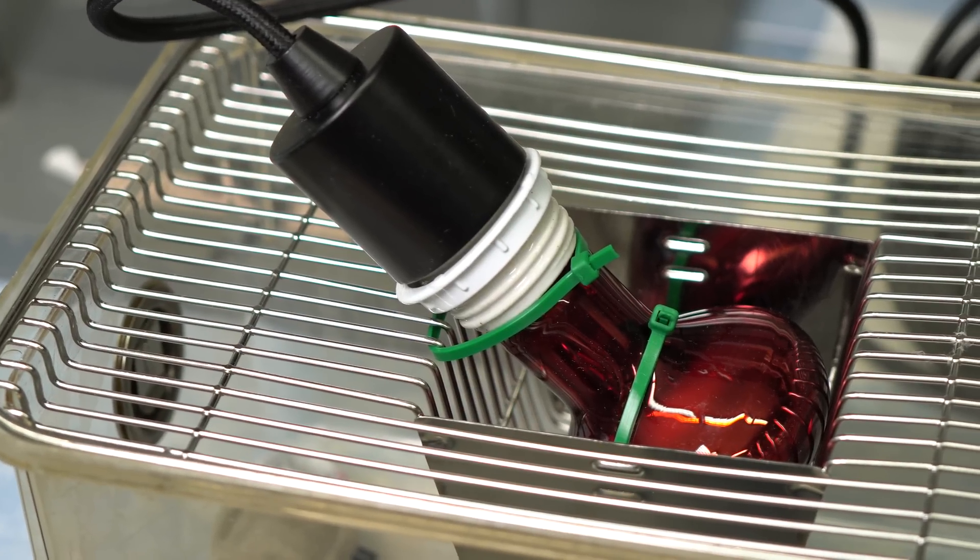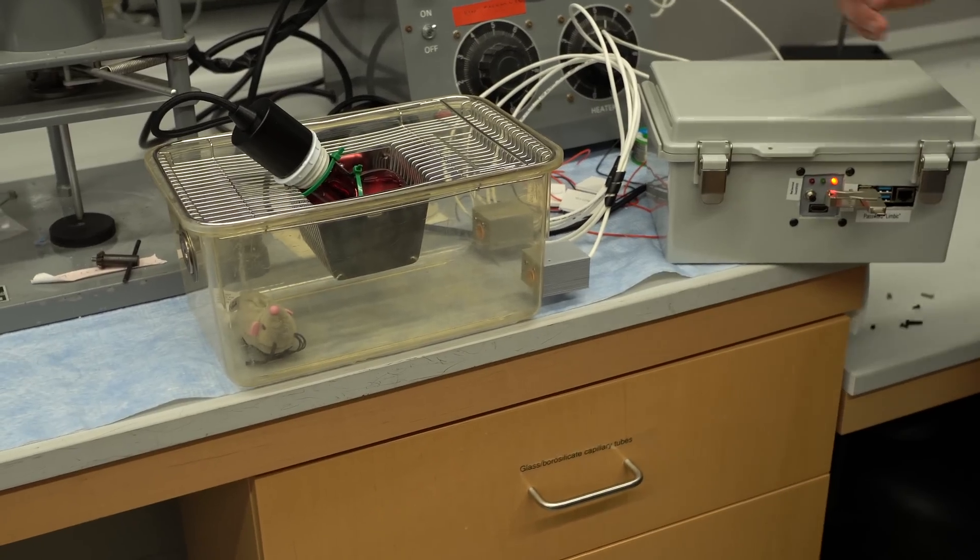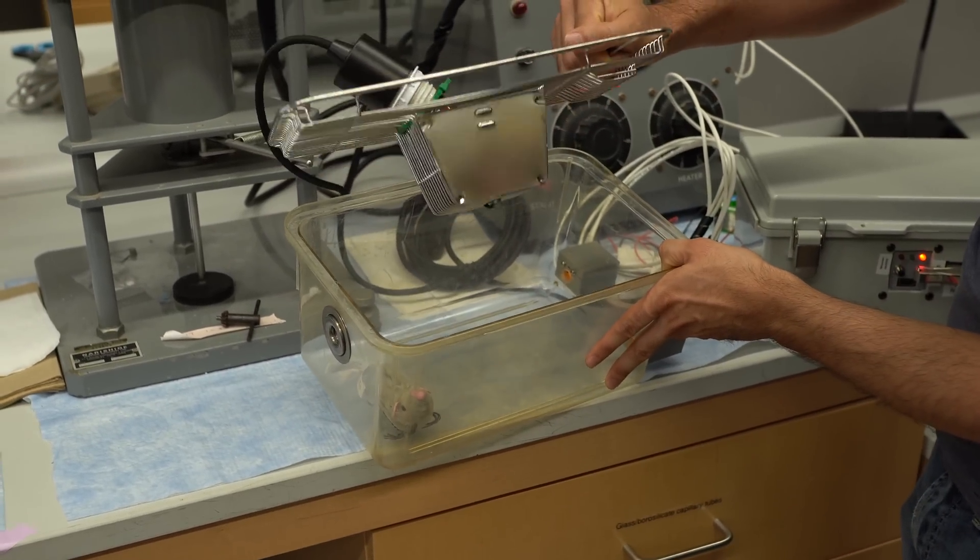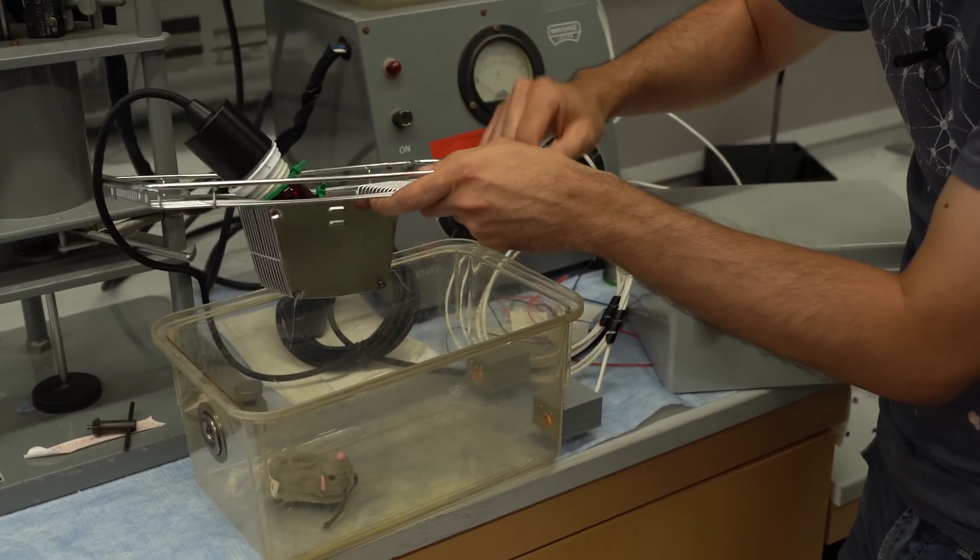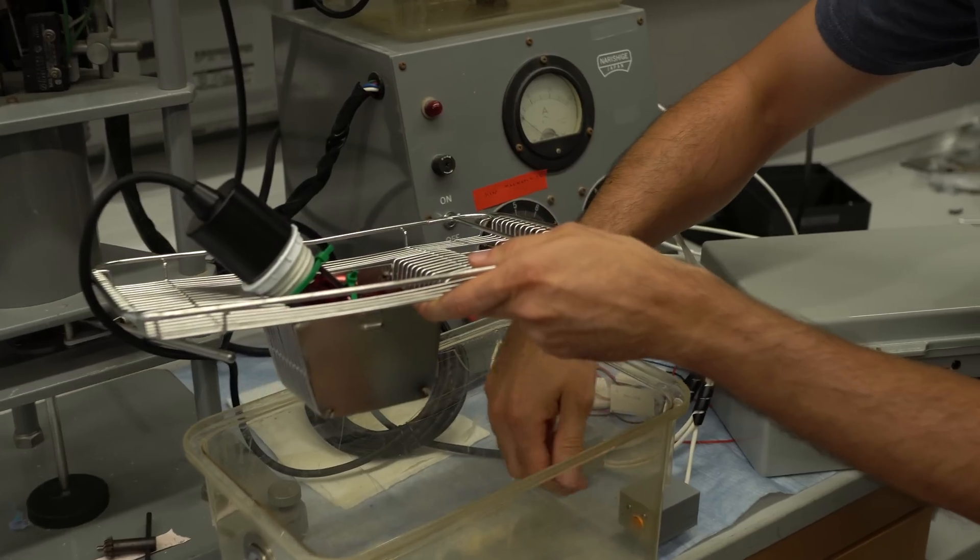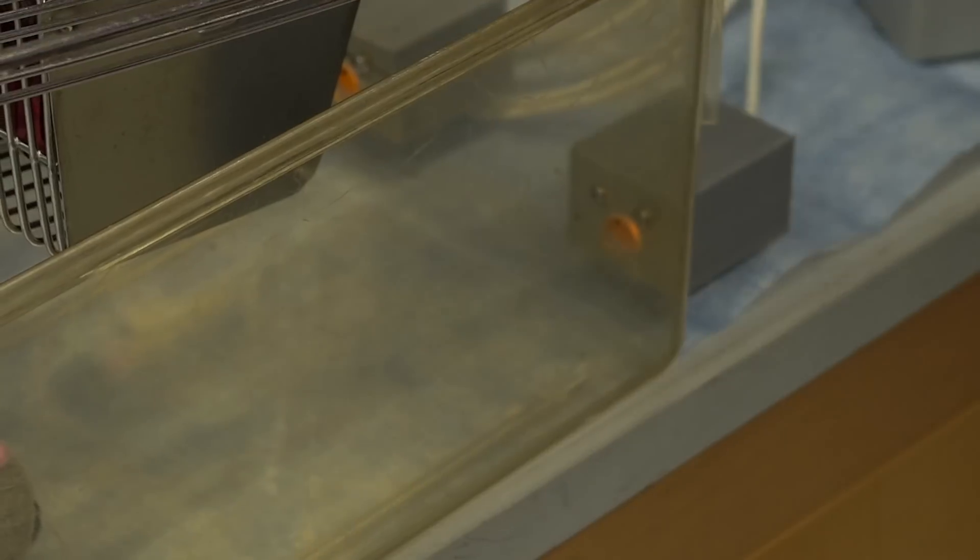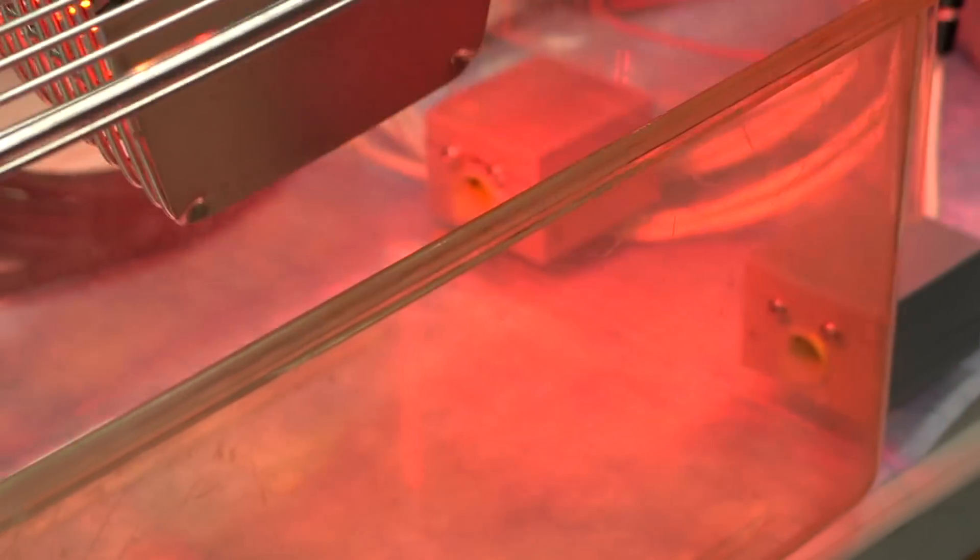So this is our operant heating chamber. This is what we use to test how the mice learn. And so the way this works is pretty simple. So inside of here is a nose poke. So the mouse can run around in here just like this, and he can stick his nose into either of these ports. And if he sticks his nose into this port, nothing happens. If he sticks his nose into this port, then the heat lamp comes on.